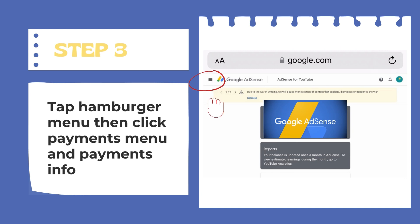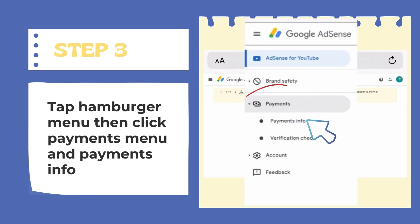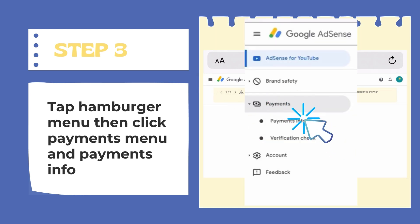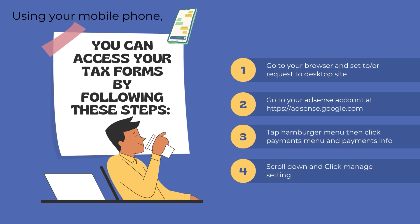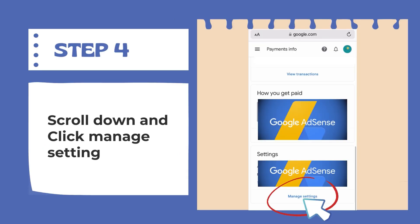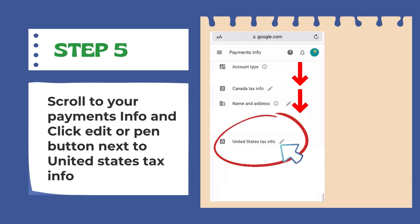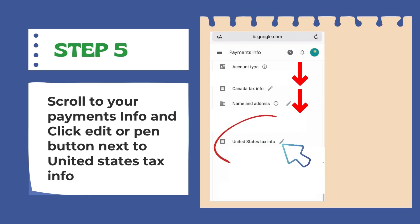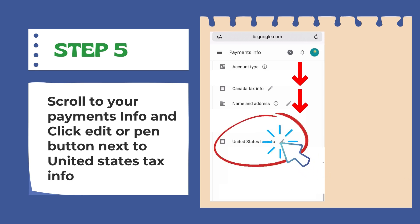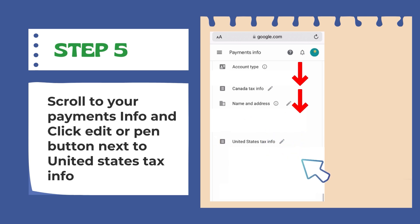Tap the hamburger menu, then click the Payments menu and Payments Information. Step number four: scroll down and click Manage Settings. Step number five: scroll to your Payments Information and click the Edit or pen button next to United States Tax Information.